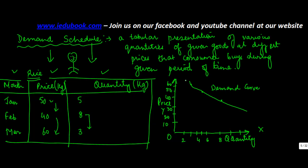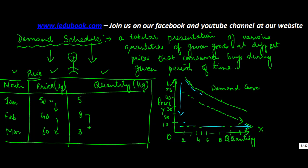A demand curve under normal circumstances, with other factors remaining constant, is normally downward sloping towards the right. Why? Because this shows that with every fall in price, the quantity of goods which a consumer buys keeps on increasing. The quantity is on the x-axis and the price is on the y-axis, so as the price keeps on falling, the quantity keeps on increasing.